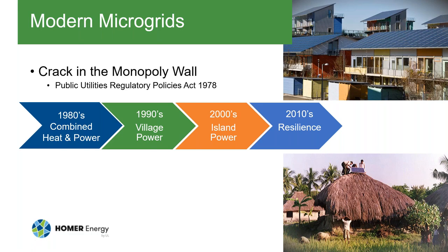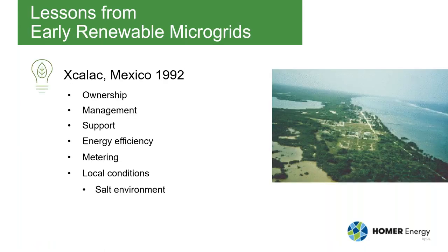What's really taken off lately are grid-connected microgrids, and the buzzword now is resilience. Lessons from the early microgrids: the Village Power Program started in 1992, including one of the first microgrids on the Yucatan in Mexico. We learned that it's really important to have clear ownership — this project was donated to the village and nobody was responsible for it, so it didn't get adequate support. You need a management structure in place.